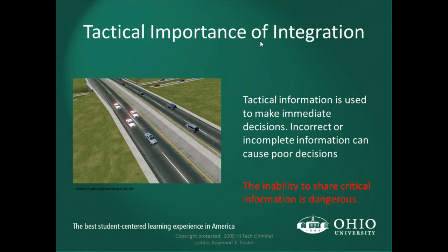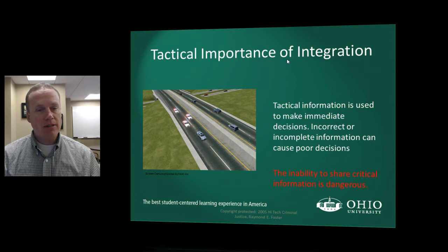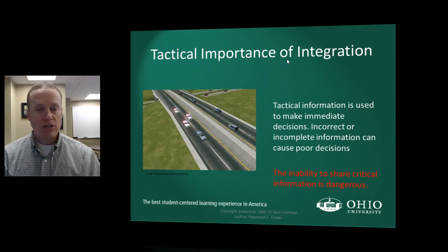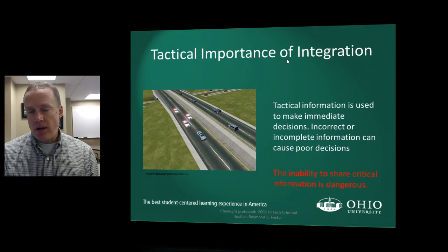Tactically, information is used to make immediate decisions. Incorrect or incomplete information can cause poor decisions, so the inability to share tactical information is critically dangerous. Consider a car chase occurring across jurisdictional lines — not being able to radio ahead to coordinate, lay down spike strips, or barricade. You can see how lacking that integration would be dangerous.